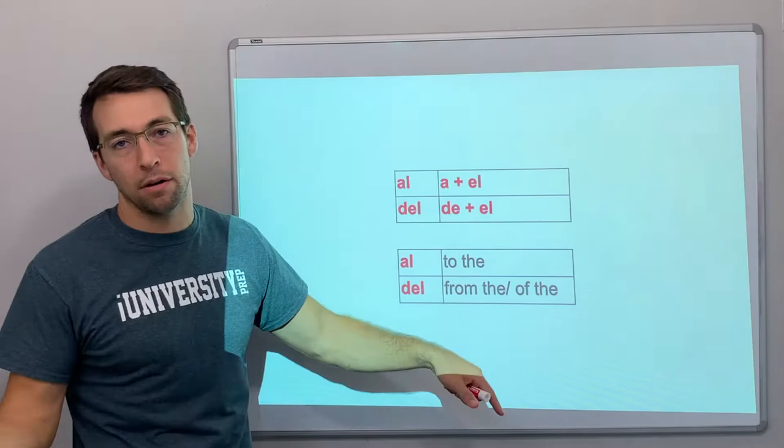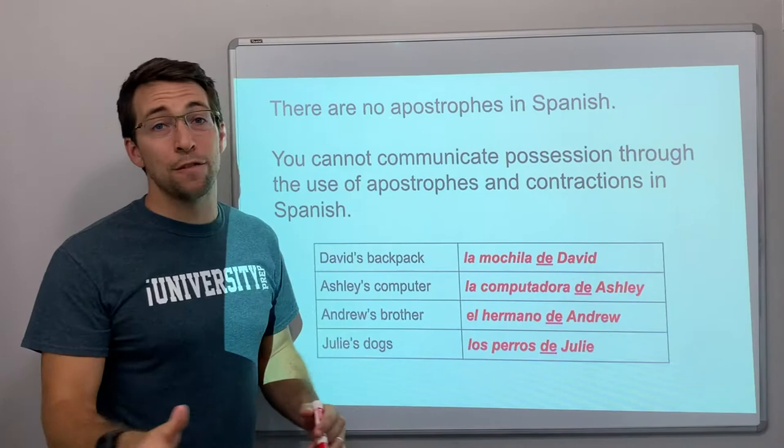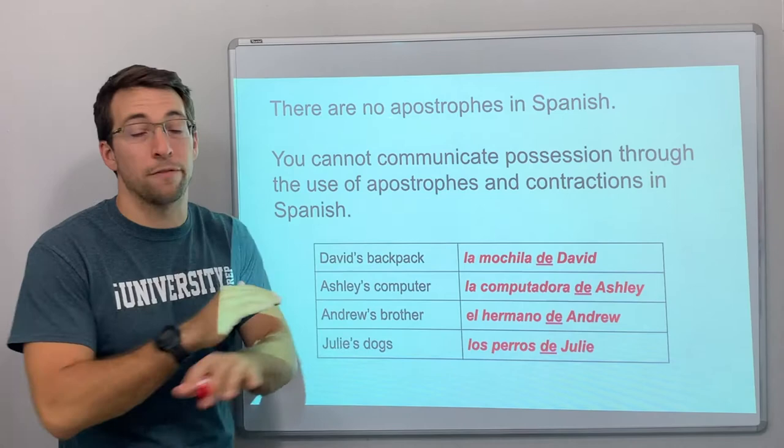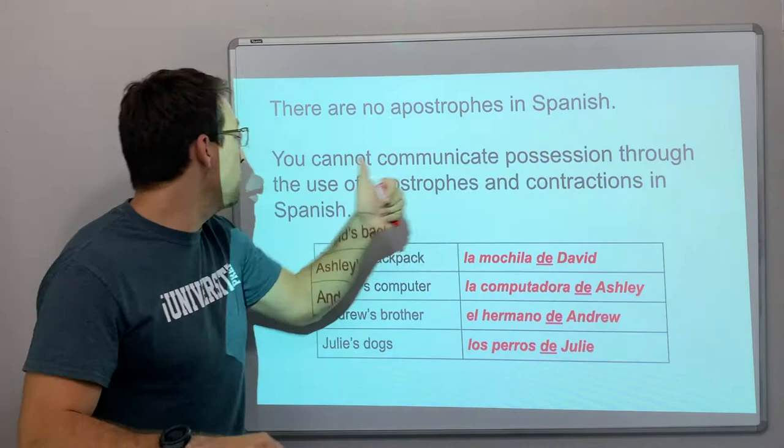Al and del are the only contractions in all of Spanish. Now check this out: there are no apostrophes in Spanish. In English you have apostrophe-S to show ownership, or contractions like could've, would've, should've — where you contract two words and add an apostrophe. That does not happen in Spanish. You cannot communicate possession through the use of apostrophes and contractions in Spanish.